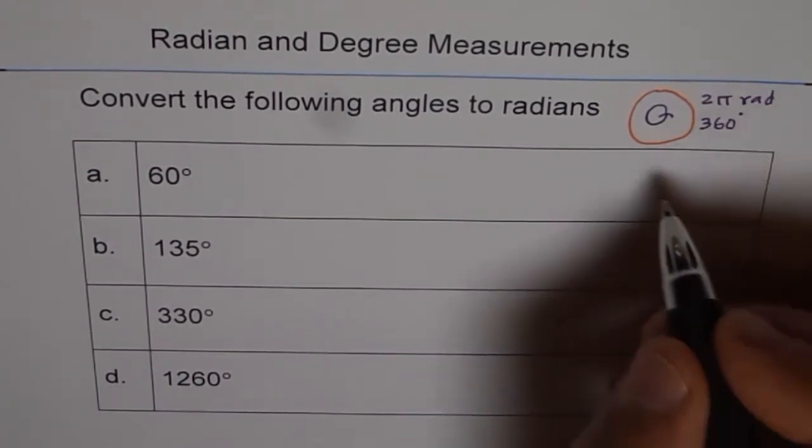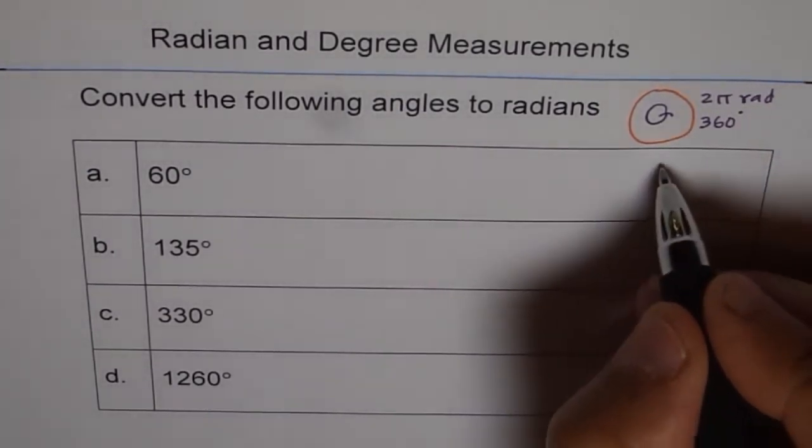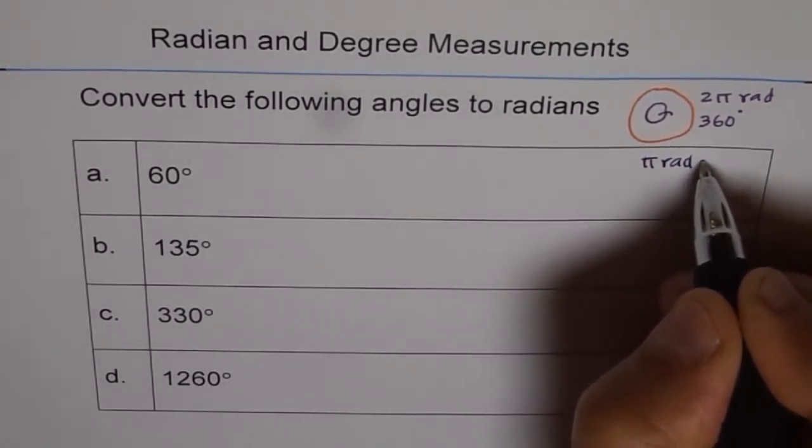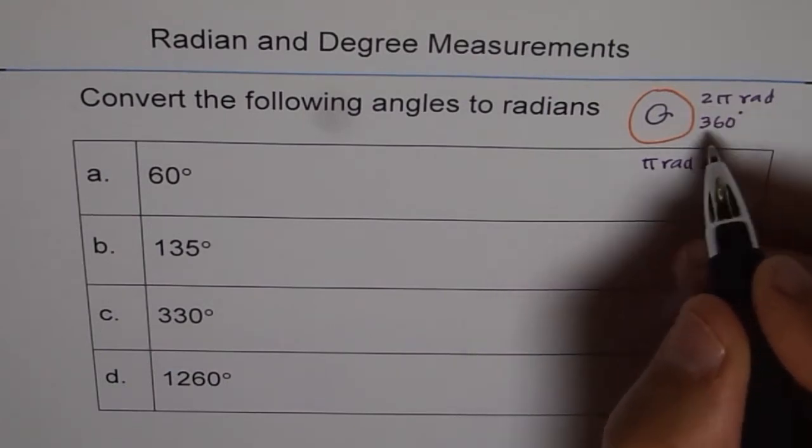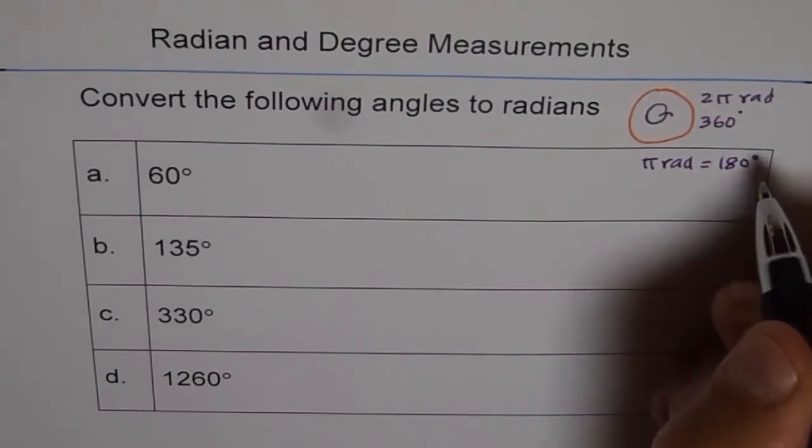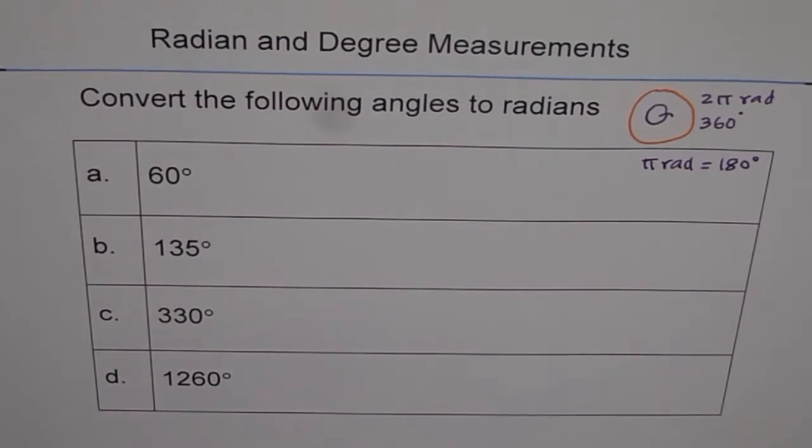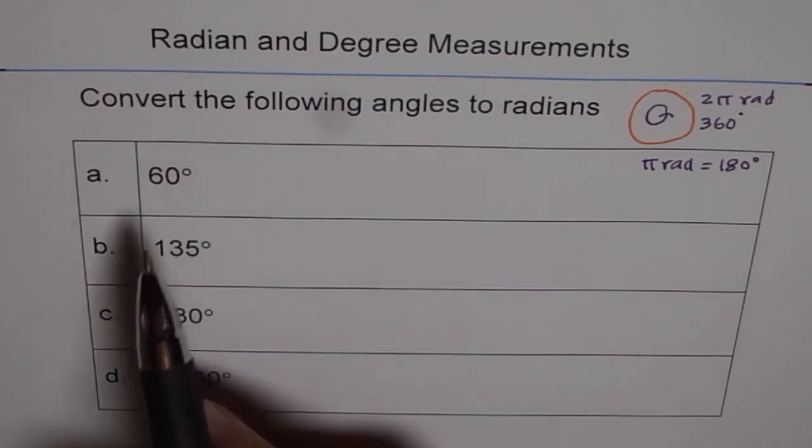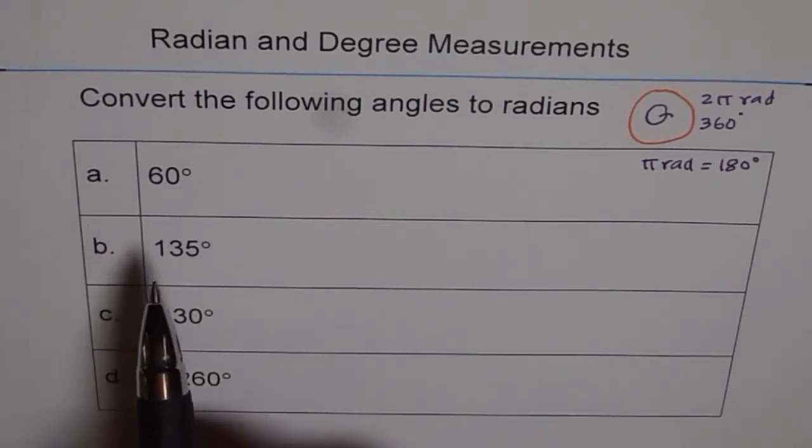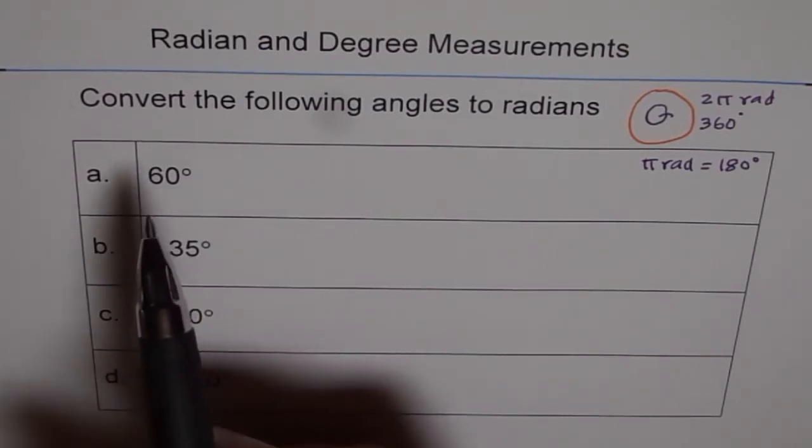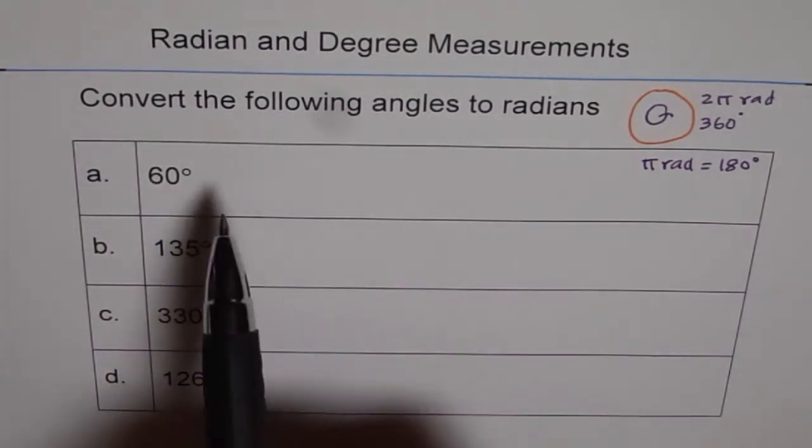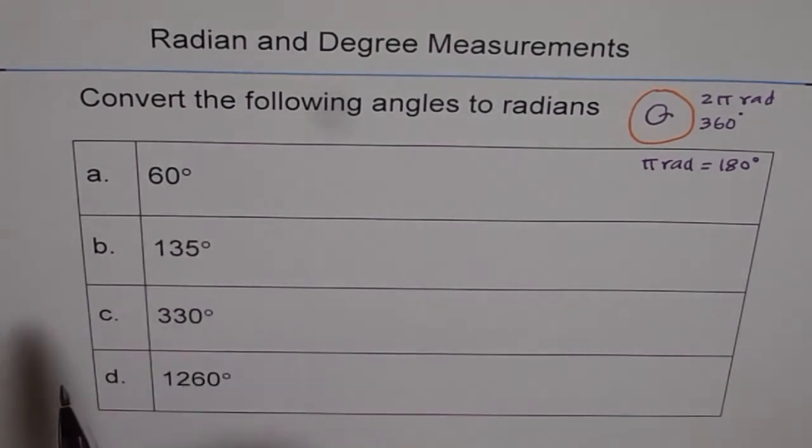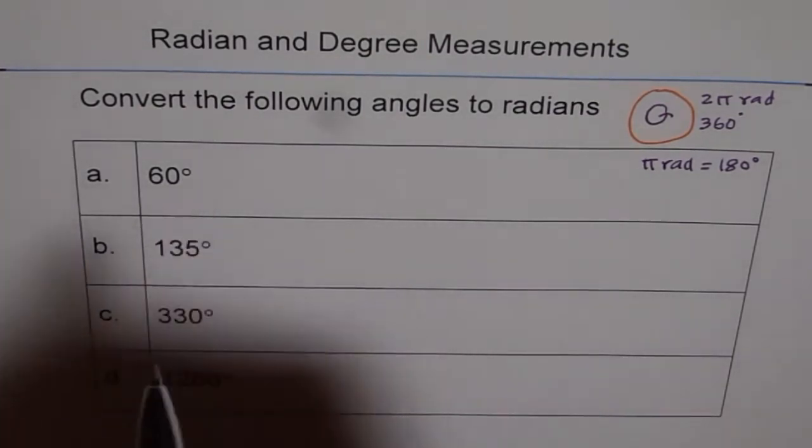So we can say this relationship here is π radians equals to half of 360. Half of 2π is π. Half of 360 is 180 degrees. So that is the relation between radians and degrees, and we will use this relation to convert. And I will show you how I do it.